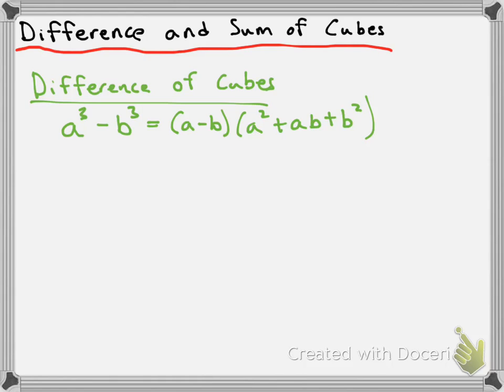So let's take a look at an example of using this. For example, how about we factor 64x cubed minus 1,331. So the first goal that we have here is to express both of these terms as a thing to the power of 3.